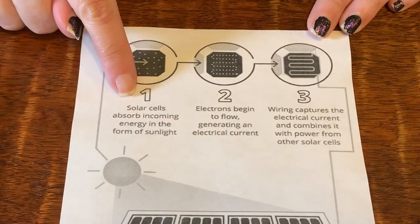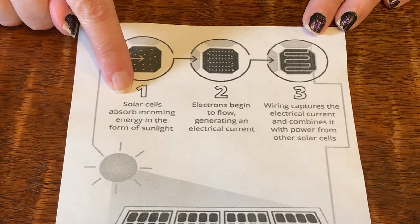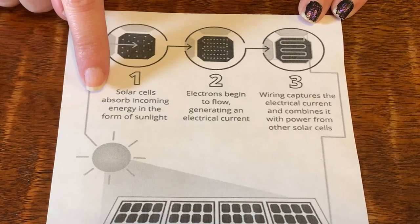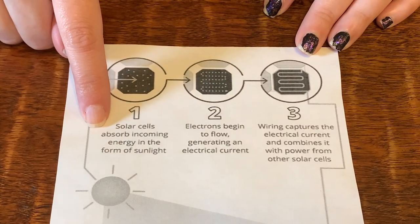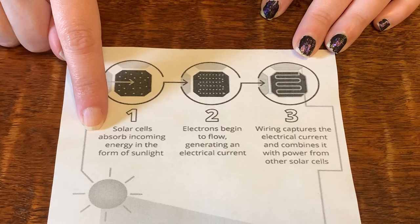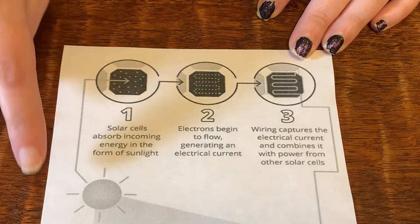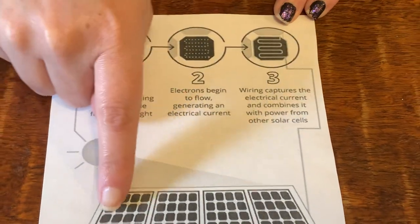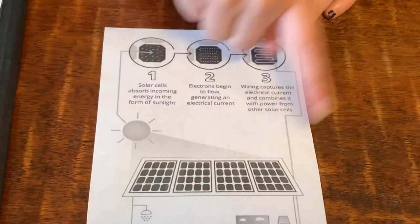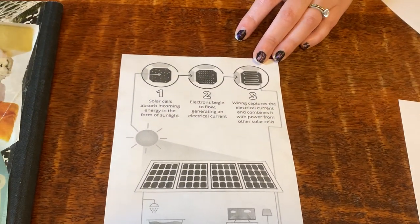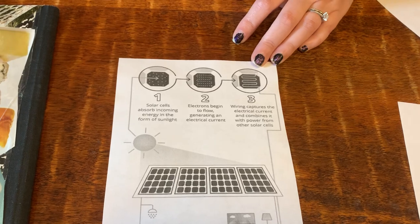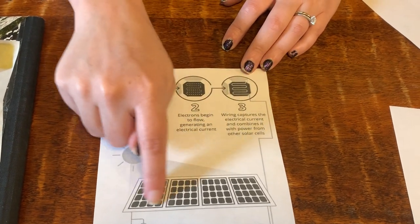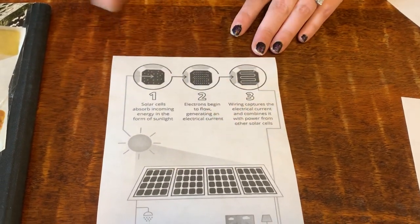Number one: solar cells. These are special cells that absorb incoming energy in the form of sunlight. The sunlight comes into these cells. You may have seen them — they look like this. I have a neighbor down the street who has this on their roof.